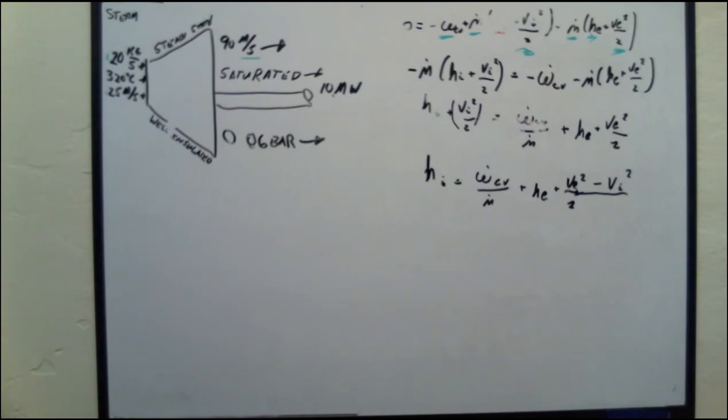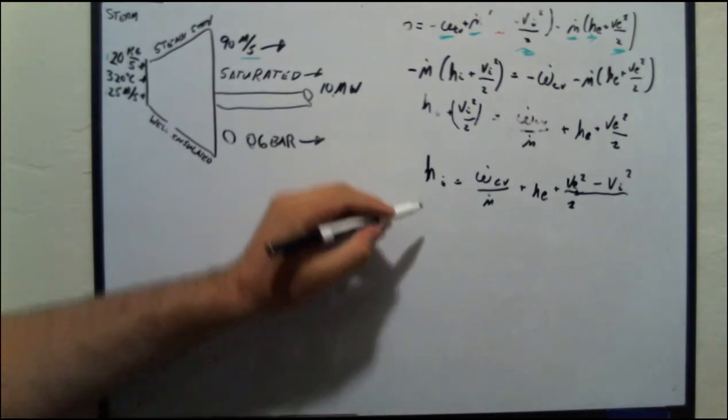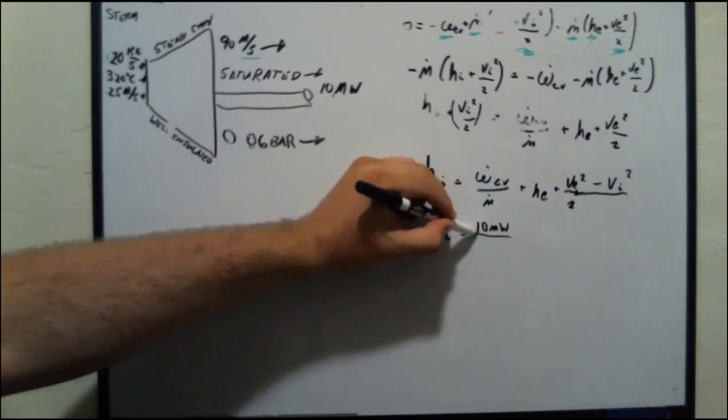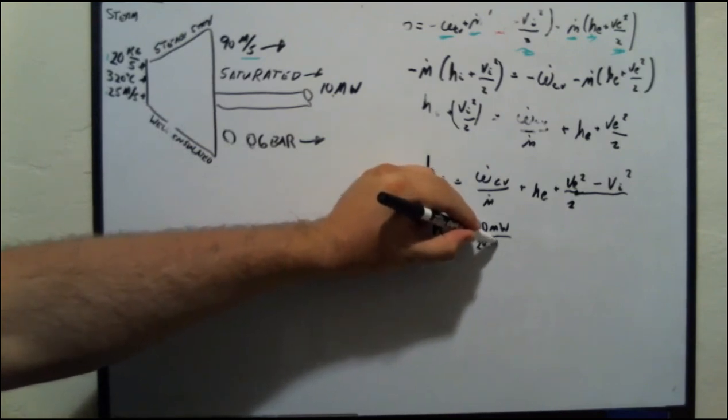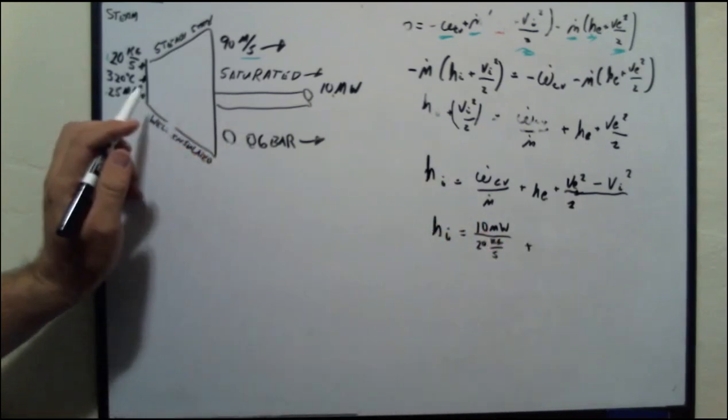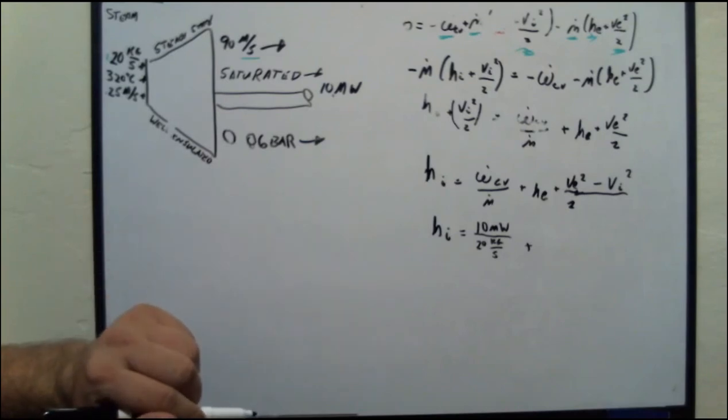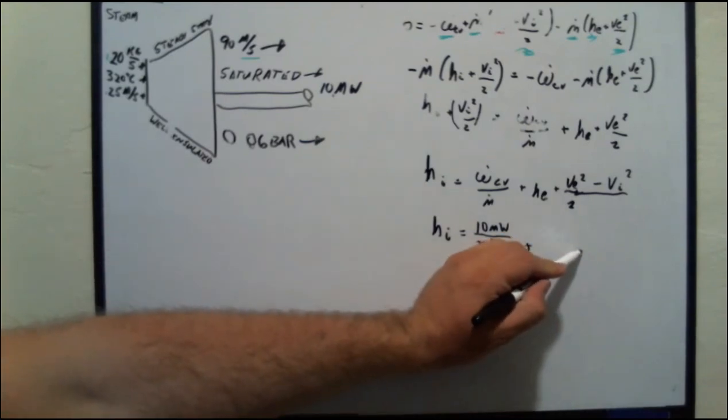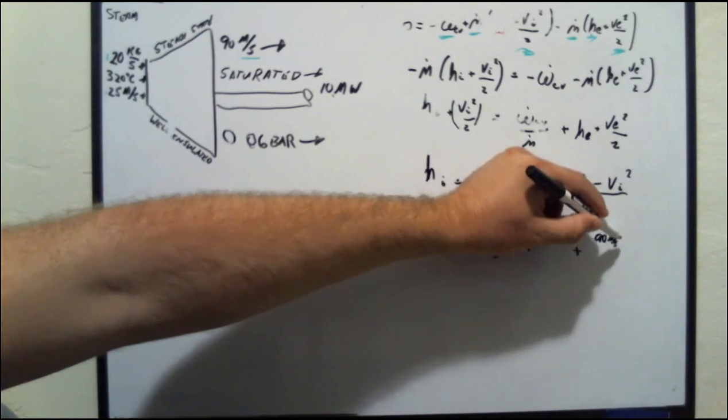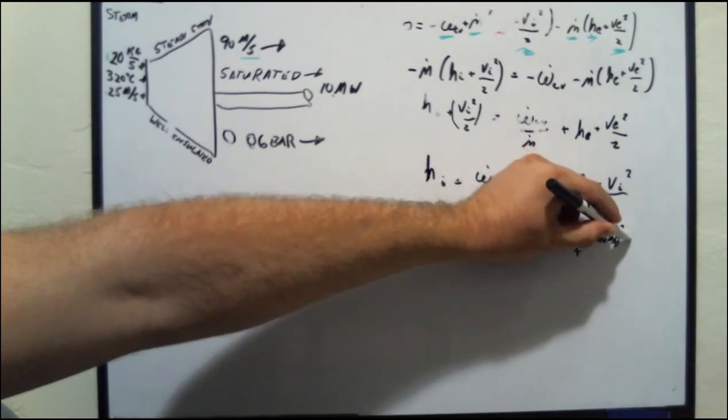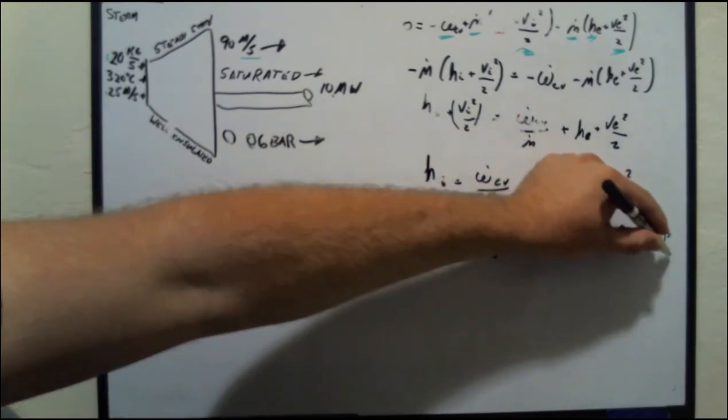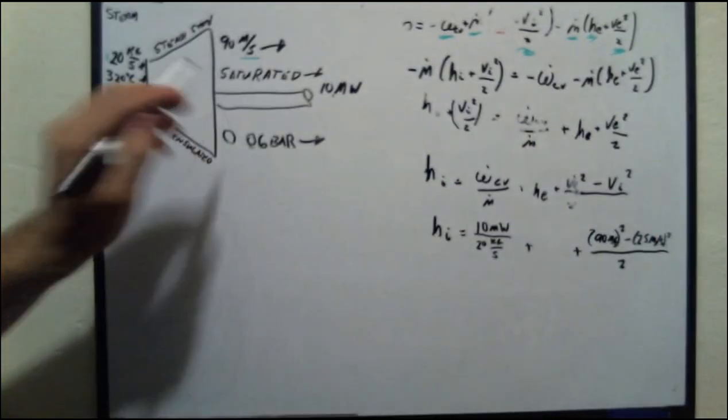Let's plug in some numbers and see what we can get. First thing, solving for h_i, I know that this is 10 megawatts divided by mass flow rate of 20 kilograms per second plus enthalpy out we'll have to go to NIST to calculate that, plus v_e squared so that's going to be 90 meters per second squared minus 25 meters per second squared all divided by 2. So let's go to NIST and see what that equals.